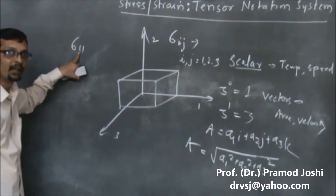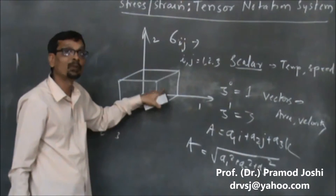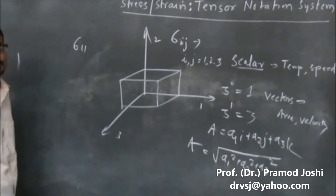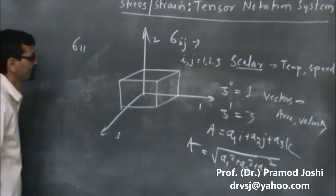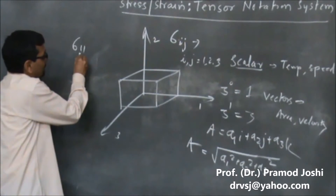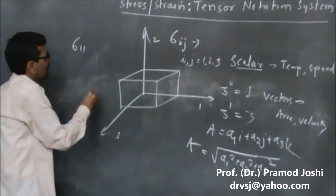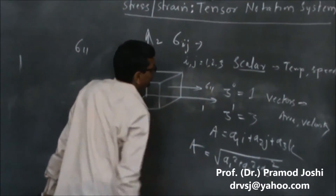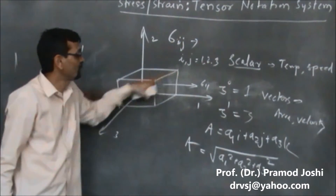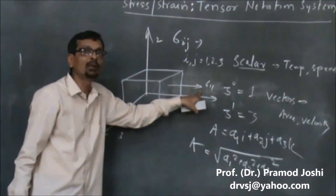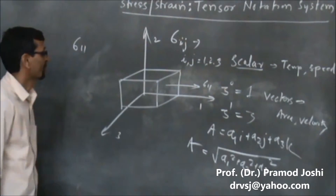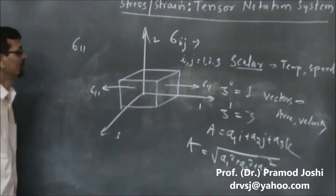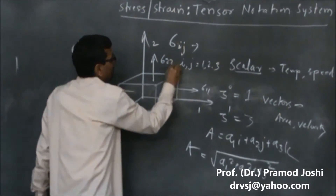The second subscript indicates the direction of the stress element itself. Since in this particular case both subscripts are equal, the stress can be denoted accordingly. The first subscript refers to the plane and the second subscript refers to the direction of the stress element. So sigma 1-1 can be represented like this, whereas sigma 2-2 can likewise be represented.